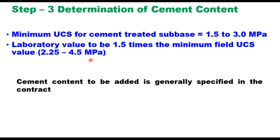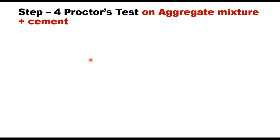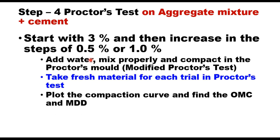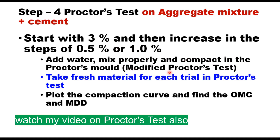Step three is to conduct a Proctor test to determine the Optimum Moisture Content (OMC) and Maximum Dry Density (MDD). This test is conducted on the aggregate mixture plus cement. Start with about 3 percent water content and increase in steps of 0.5 to 1 percent. For highways, the Modified Proctor test is used. For each increment in water content, take fresh material, mix properly, compact in the Proctor mold, and plot the compaction curve to find OMC and MDD.